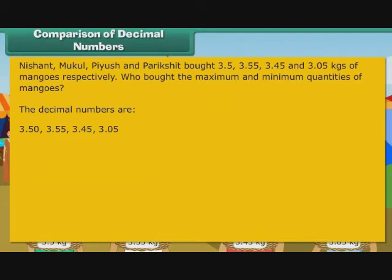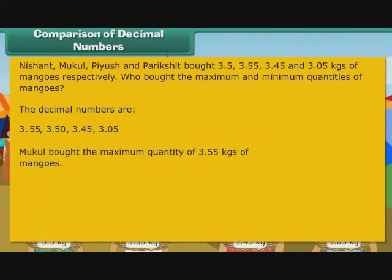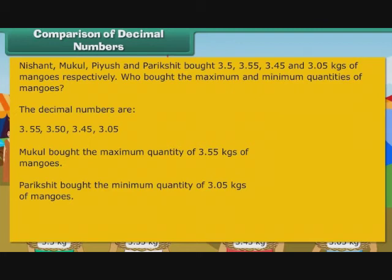Therefore, the quantities in descending order are 3.55, 3.50, 3.45, 3.05. It means Mukul bought the maximum quantity of 3.55 kgs of mangoes, and Parikshit bought the minimum quantity of 3.05 kgs of mangoes.